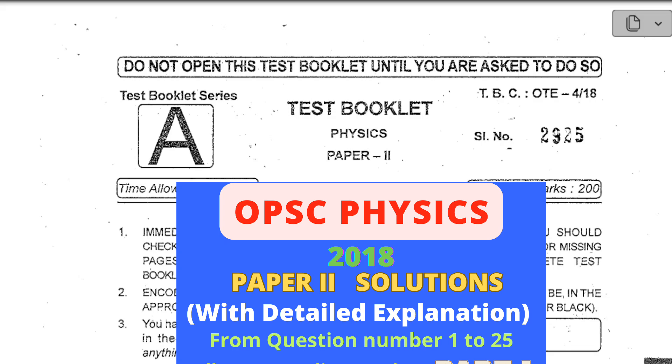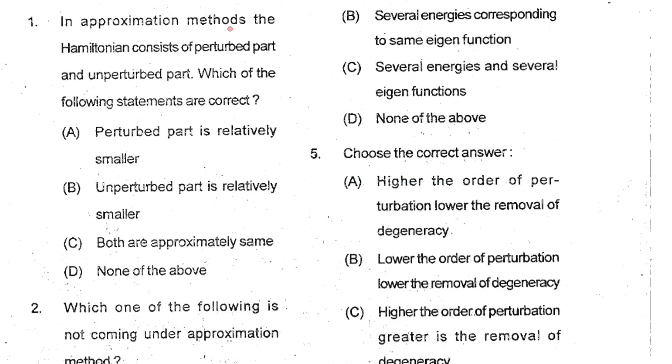Alright, let's start. Question number one: In approximation methods, the Hamiltonian consists of perturbed part and unperturbed part. Which of the following statements are correct? We know the perturbed part is relatively smaller than the unperturbed part. So A is your correct option.